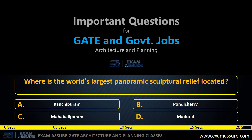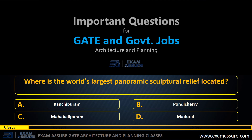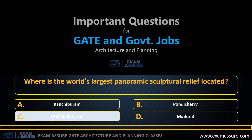Next question: where is the world's largest panoramic sculptural relief located? Option A: Kanchipuram, option B: Pondicherry, option C: Mahabalipuram, option D: Madurai. The correct answer is option C: Mahabalipuram.